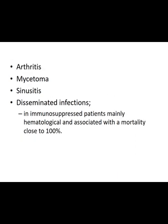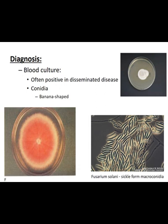Fusarium can also cause arthritis, mycetoma, and sinusitis, as well as disseminated systemic infection. Mortality when there is dissemination is nearly 100%. For diagnosis, blood culture is often positive in disseminated cases. Banana-shaped conidia are seen — these are the conidia of Fusarium. The colony shown is of rapid growth.